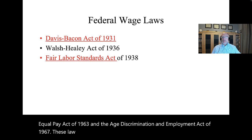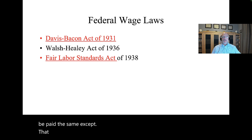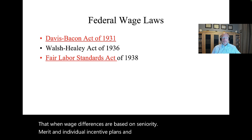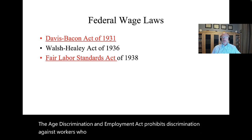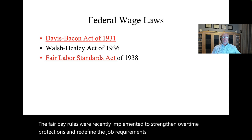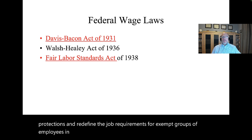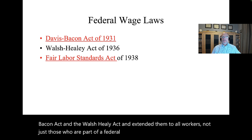The Equal Rights Provisions are amendments to the FLSA and include the Equal Pay Act of 1963 and the Age Discrimination in Employment Act of 1967. These laws state that women performing the same job as men must be paid the same, except when wage differences are based on seniority, merit, and individual incentive plans and not on gender. The Age Discrimination in Employment Act prohibits discrimination against workers who are 40 and older. In sum, the FLSA took many provisions of the Davis-Bacon Act and Walsh-Healey Act and extended them to all workers, not just those on federal contracts.